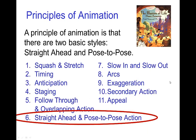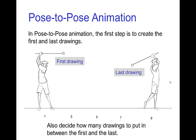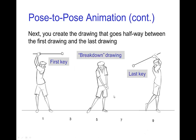One of the principles of animation is that there are two basic styles: straight ahead and pose to pose. In pose to pose, you start with the first drawing and then you have the last drawing in the action. You also have an idea of how many drawings you're going to have in between, so you have a sense of the total time for the action. Then you create the breakdown key — the breakdown pose that is halfway in time between the first and the last.